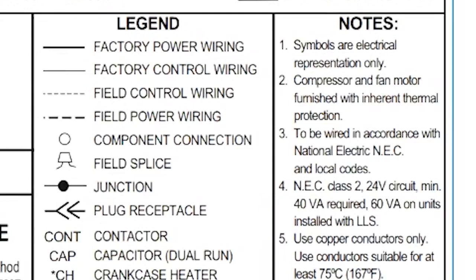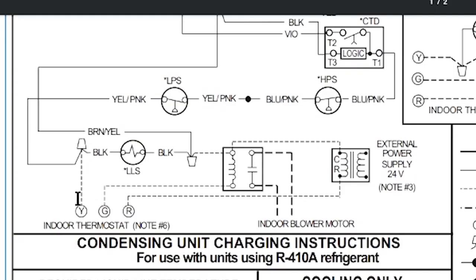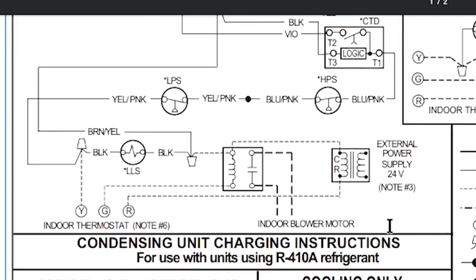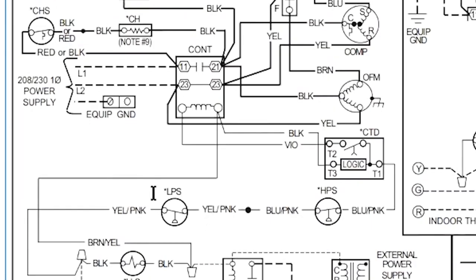A component connection field splice is something you make in the field with a wire nut — you can see the Y wire coming up and connecting to a wire nut. If you have to use an external power supply, you'd connect that yourself. Reading the notes and legend first can really help. Also pay attention to little stars, because that means there's something more to look at.